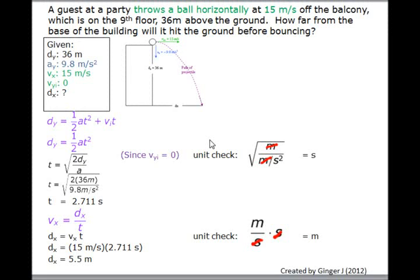A guest at a party throws a ball horizontally at 50 meters per second off the balcony, which is on the next floor 36 meters above the ground. How far from the base of the building will it hit the ground before bouncing?